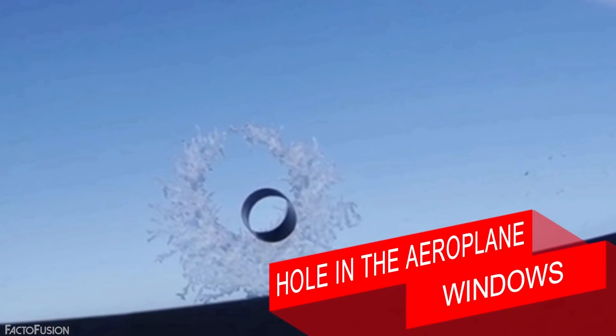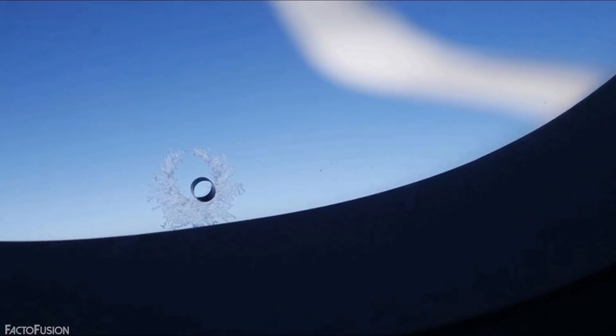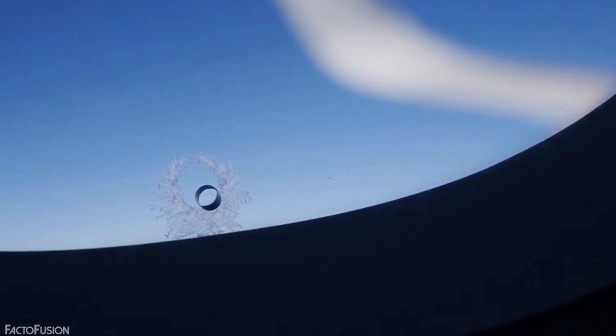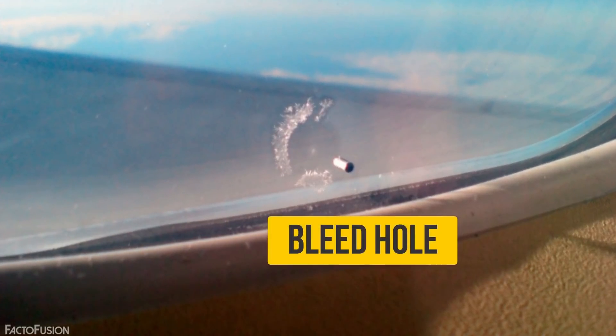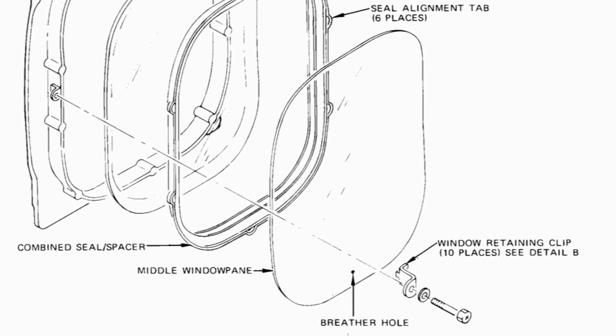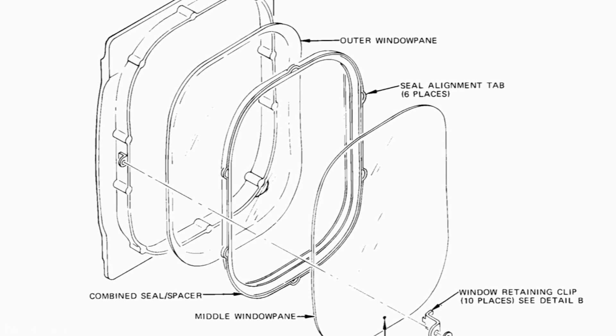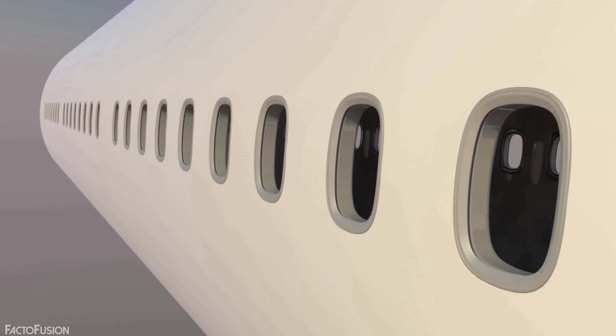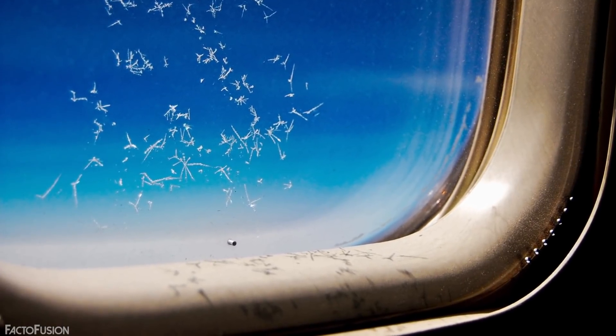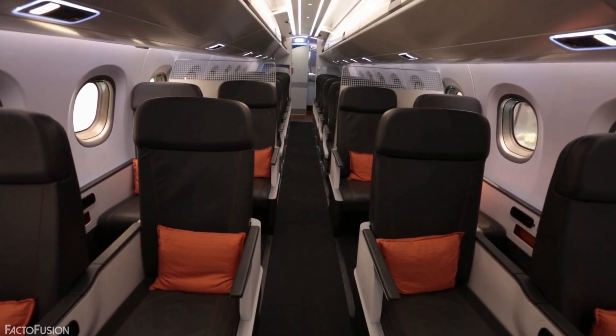At number three: the hole in airplane windows. Have you ever wondered why there are holes in airplane windows? Don't worry — they're there for your safety. This tiny hole is known as a bleed hole and is sandwiched between two other panes of acrylic material. The first pane is the one you can touch inside the cabin, next is the pane with the bleed hole, and finally the outer pane which protects you from outside pressure. The bleed hole equalizes air pressure between the passenger cabin and the air gap between panes.